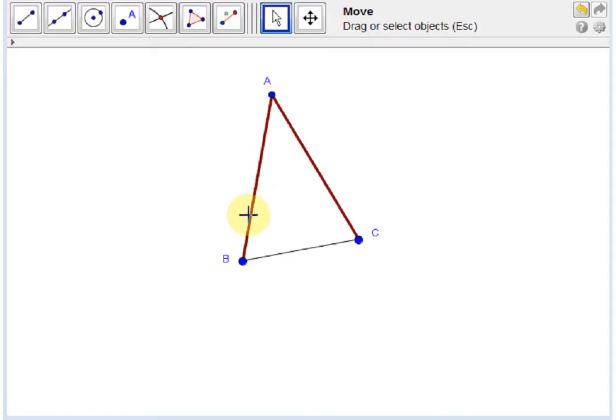Given an isosceles triangle ABC, that is, the sides AB and AC are equal, the corresponding base angles are equal. That is, angle ABC is equal to angle ACB.